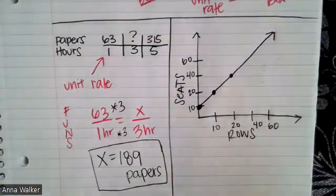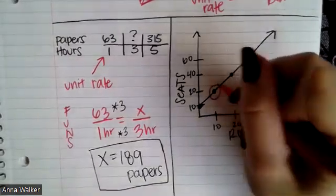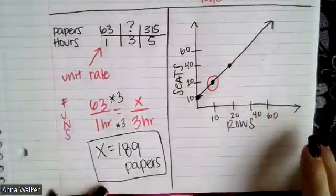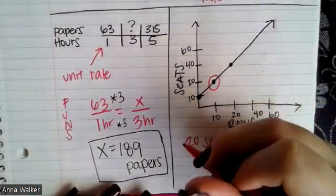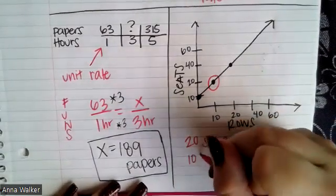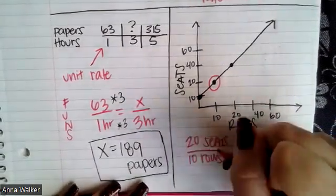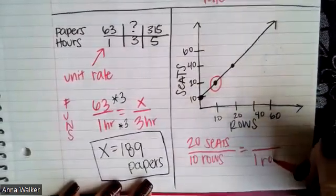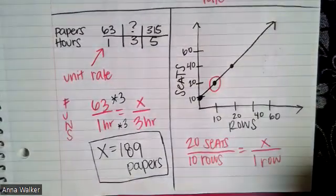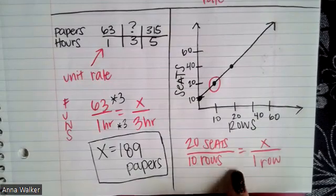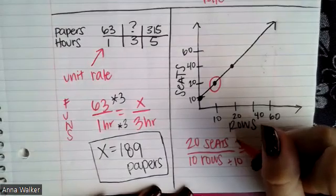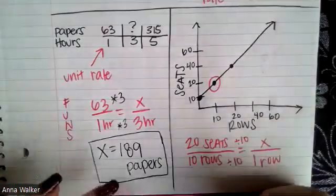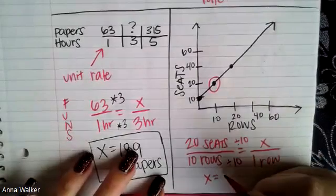All we need to do is pick a point on this graph and then set up a proportion and solve for the unit rate. I'm just going to use this one. So there are 20 seats in 10 rows. If I'm trying to figure out how much is for one row because that's the unit rate, I'm just going to solve. To go from 10 to 1, I'm just dividing by 10. So if I divide 20 by 10, then that means one row is only two seats.